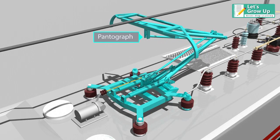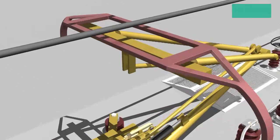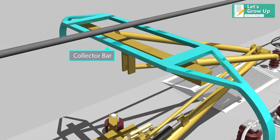Pantograph: It is a special device mounted on electric trains to collect current from overhead lines. Collector bar: It is a component of the pantograph used to collect the current.